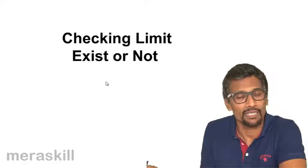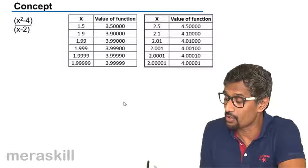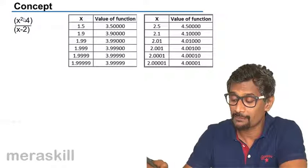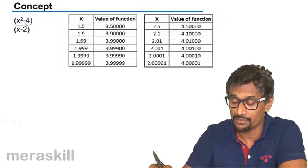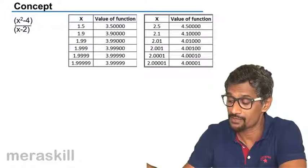Another way of checking limit, as usual, is to check whether the function is determinate or not determinate at a particular value. A very good example which you have taken even earlier, as a reminder, we have X squared minus four upon X minus two.